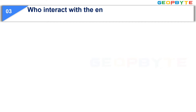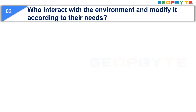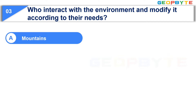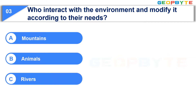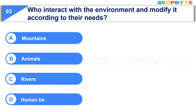Who interact with the environment and modify it according to their needs? Option A: Mountains. Option B: Animals. Option C: Rivers. Option D: Human Beings. Your time starts now.